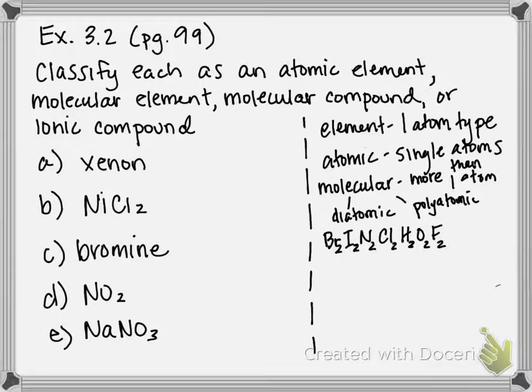For the polyatomic elements, you have sulfur, phosphorus, and selenium. And I believe phosphorus typically exists as P4, sulfur exists as S8, and selenium is one of those two multiples.